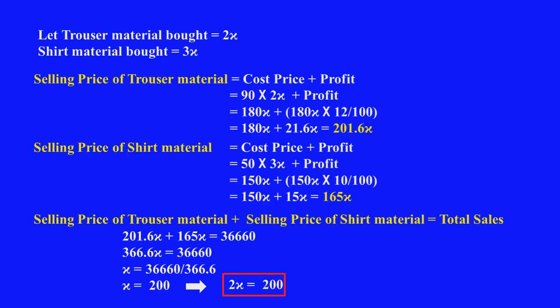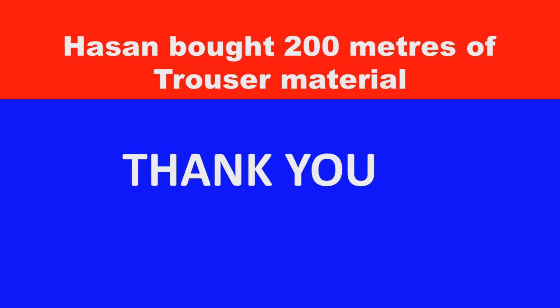For students' convenience, the total sum is given on a single page so that students can easily go through it. Thus, Hassan bought 200 meters of trouser material. Thank you, viewers.